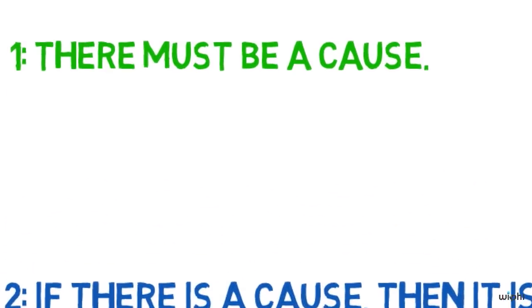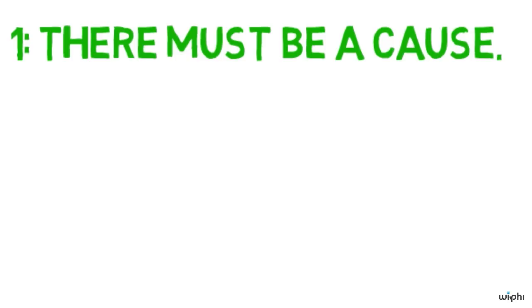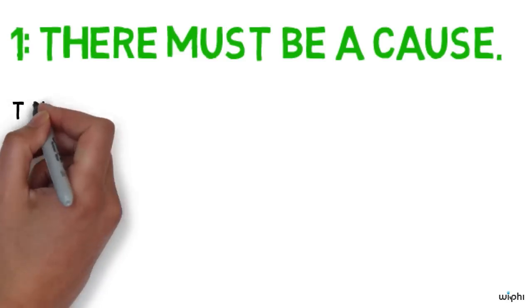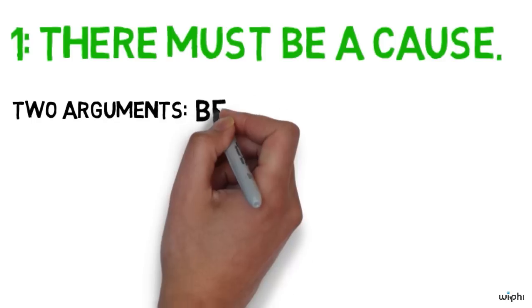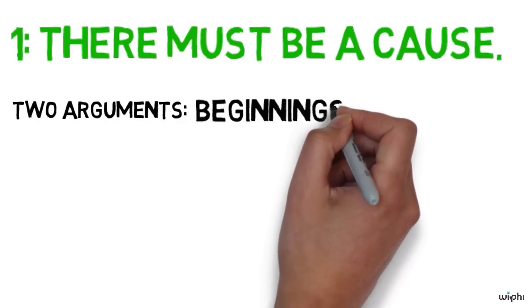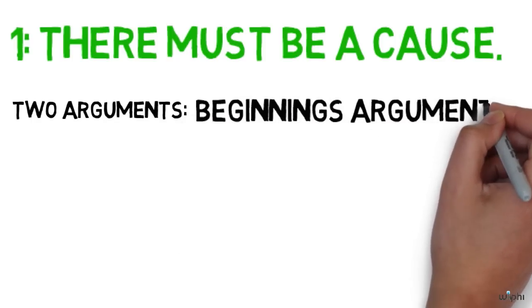The cosmological argument has two versions. It actually has many versions, but I'll be talking about two of them. The first one I'll call the beginnings argument, sometimes also called the kalam argument. Then the second one is the modal argument. Now I'll explain what those terms mean. You don't need to know what they are yet.